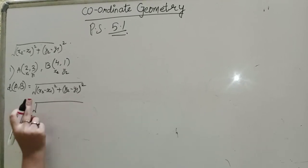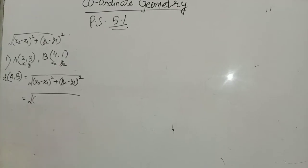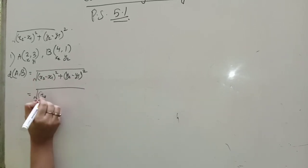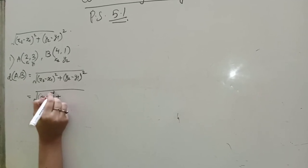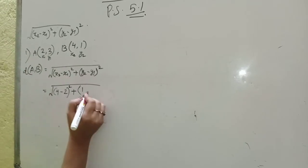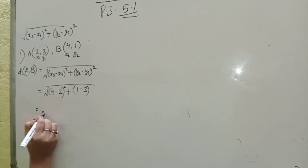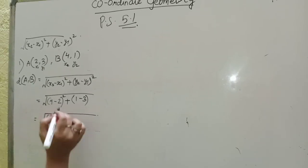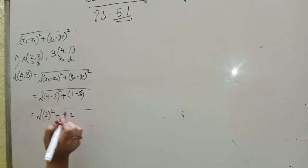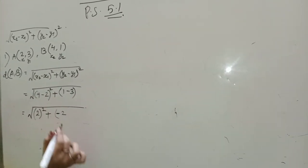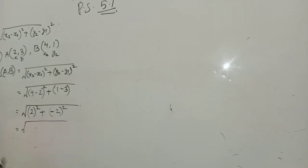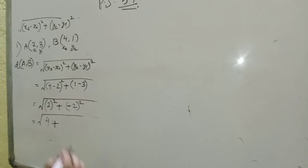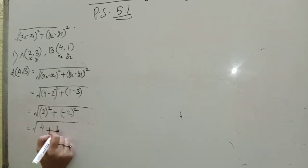Now substituting the values: x2 is 4 and x1 is 2, y2 is 1 and y1 is 3. So we get √[(4 − 2)² + (1 − 3)²]. That is √[(2)² + (−2)²]. The square of 2 is 4, and the whole square of minus 2 is also 4.